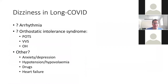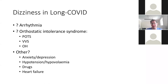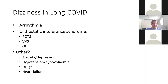Moving on to dizziness in Long COVID. Again, lots of possible causes — it may be due to arrhythmia such as AF or ectopics, or it could be related to the orthostatic intolerance syndromes, which are much more common after viral illnesses including COVID. This includes POTS, vasovagal syncope, and orthostatic hypotension. But don't forget other causes: anxiety and depression, hypotension, hypovolaemia, certain medications, and potentially left ventricular dysfunction.